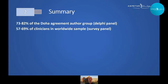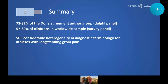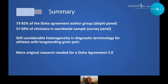In summary, the majority of clinicians are starting to adopt the Doha Agreement classification in clinical practice, which should improve communication among colleagues, with patients, and enable easier comparison of research findings. However, considerable heterogeneity in diagnostic terminology remains. We need more original research for a better foundation for a future Doha Agreement 2.0. Importantly: 'sportsman's hernia' is still heard frequently, but neither the Doha Agreement nor the British Hernia Society recommends this term.